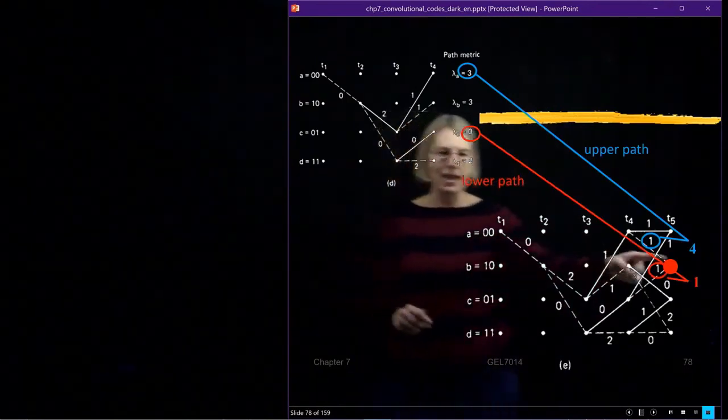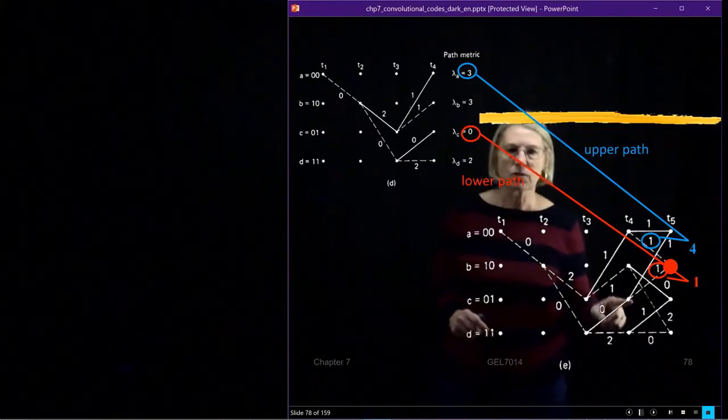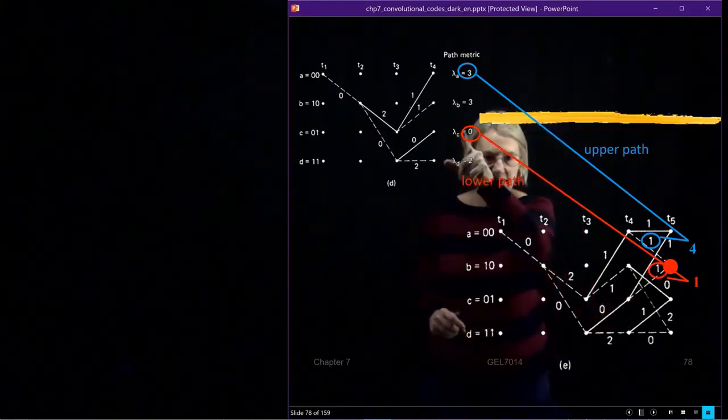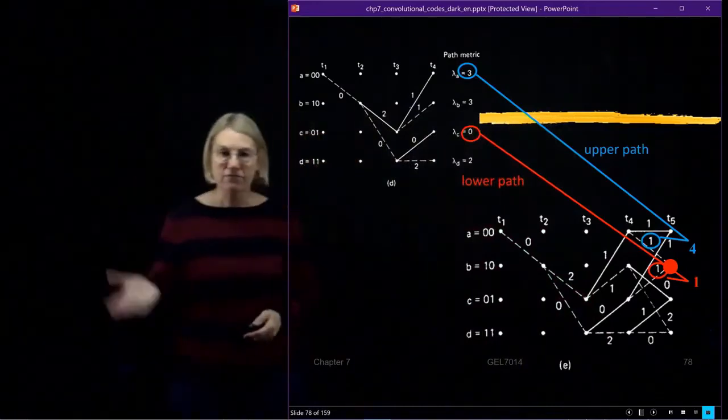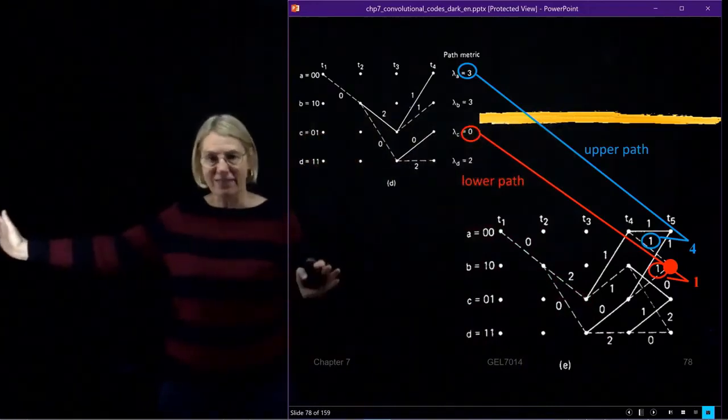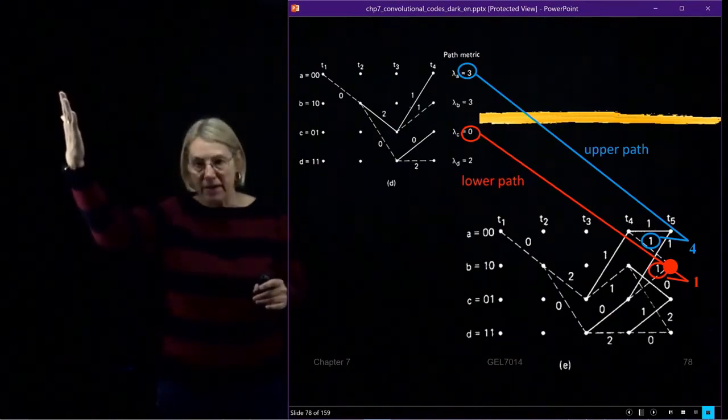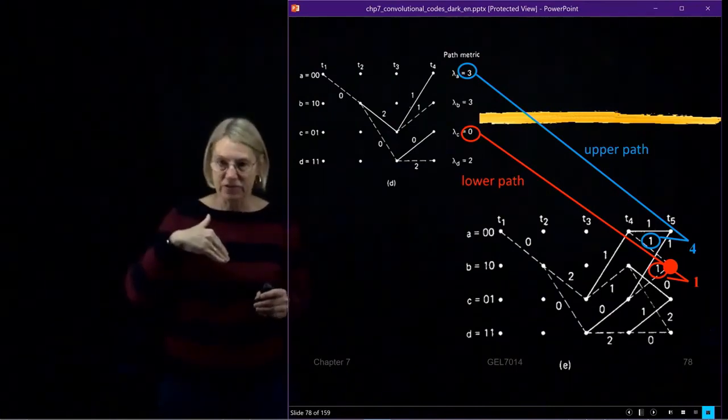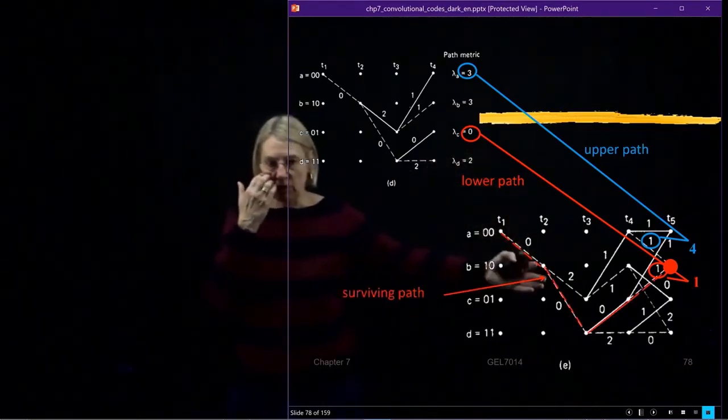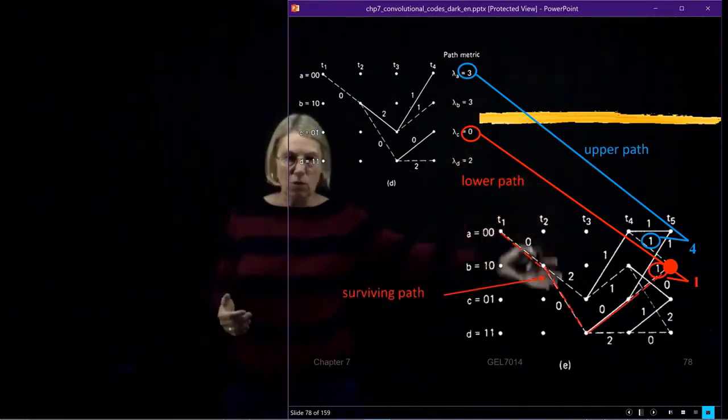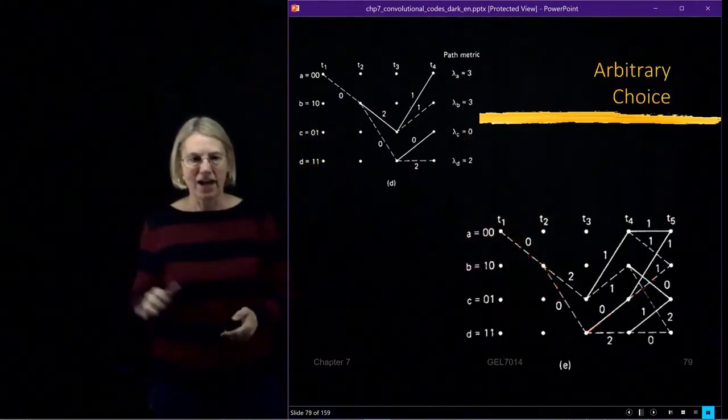The lower path came from state C. So I look at state C, what the length was. It was 0, I had 1, I get 1. So now, I don't have to go through and do the entire path length calculation. I just need the delta. Previous path metric plus new branch metric gives me new path metric. And again, I compare 4 and 1. Clearly, the lower one is smaller. I keep the lower one, and I prune out the higher one.